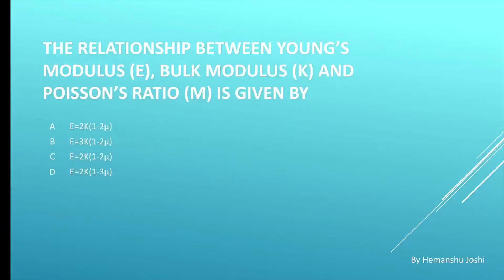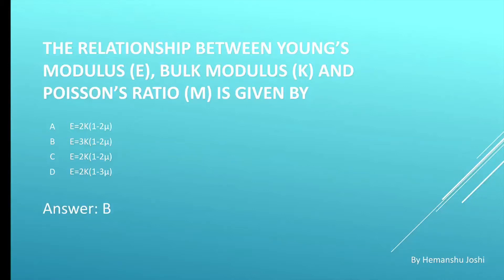The relation between Young's modulus E, bulk modulus K, and Poisson's ratio μ is given by four options: A. E = 2K(1−2μ), B. E = 3K(1−2μ). Correct answer is B. E is equal to 3K into (1−2μ).